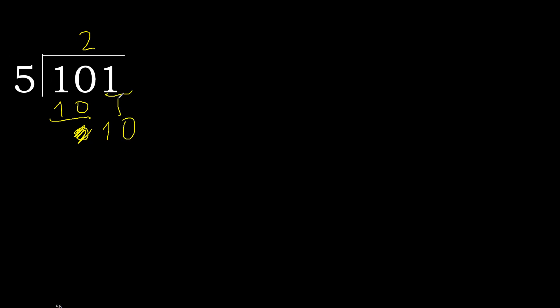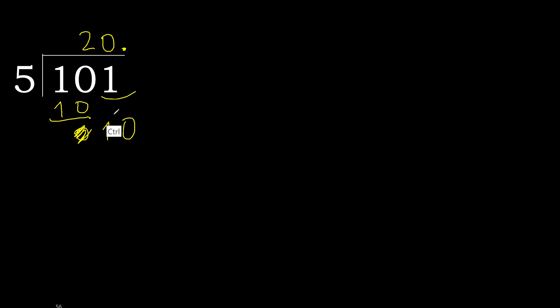2 numbers, therefore 0 point. OK: 10. 0 point, because here 2 numbers. OK: 10. 5 multiplied by 2 is 10, not greater. OK, subtract: 0. Therefore finish — 101 divided by 5 is 20.2.